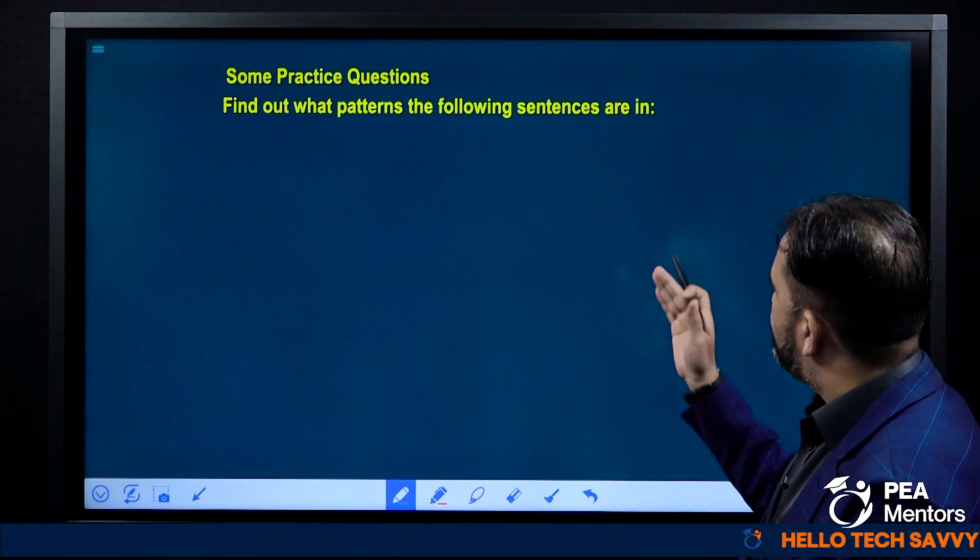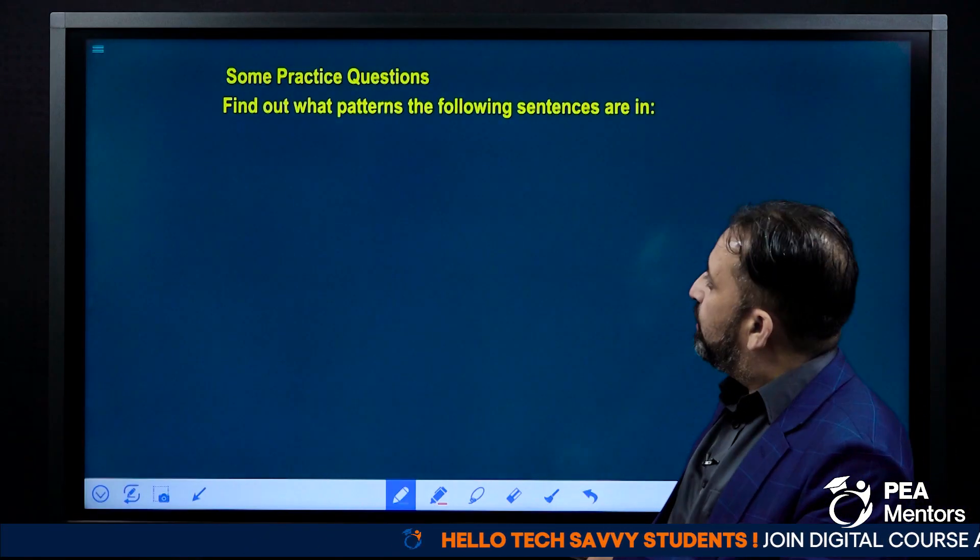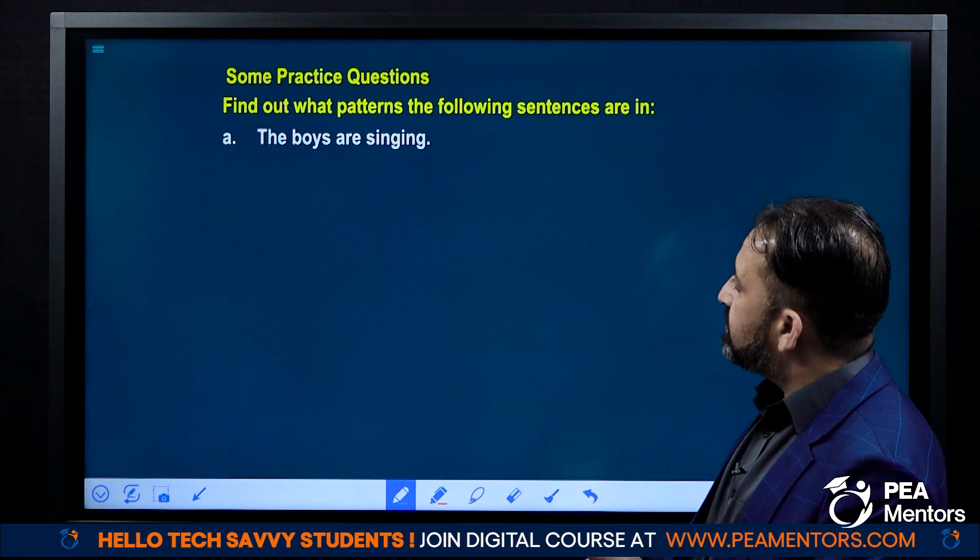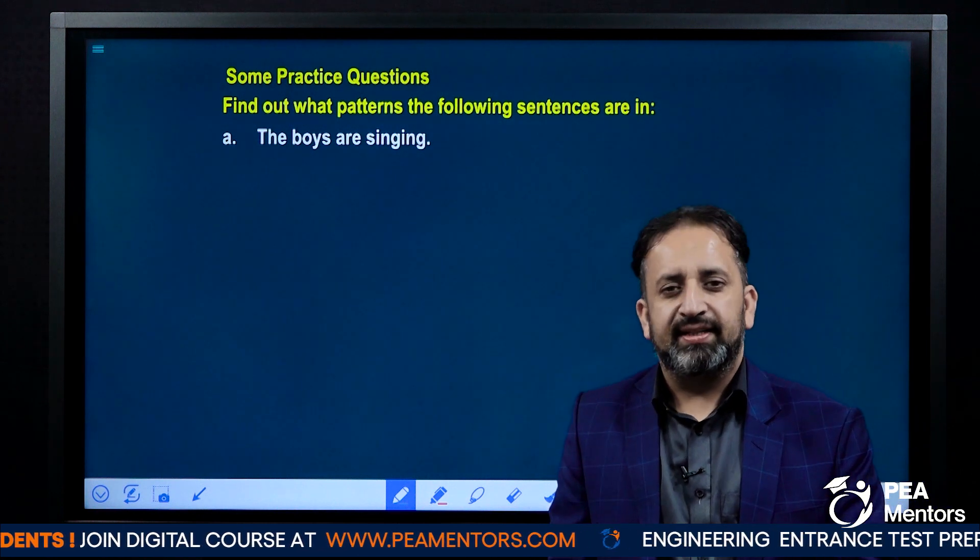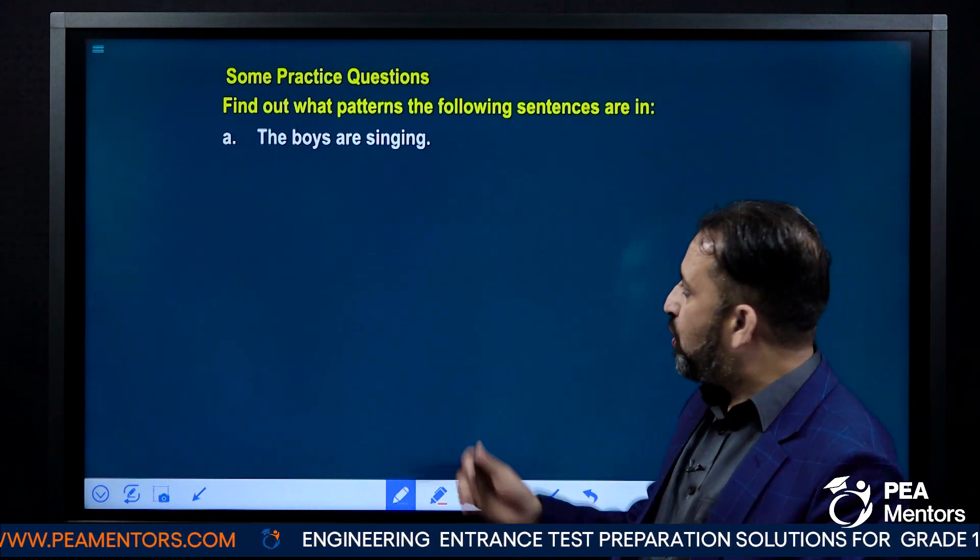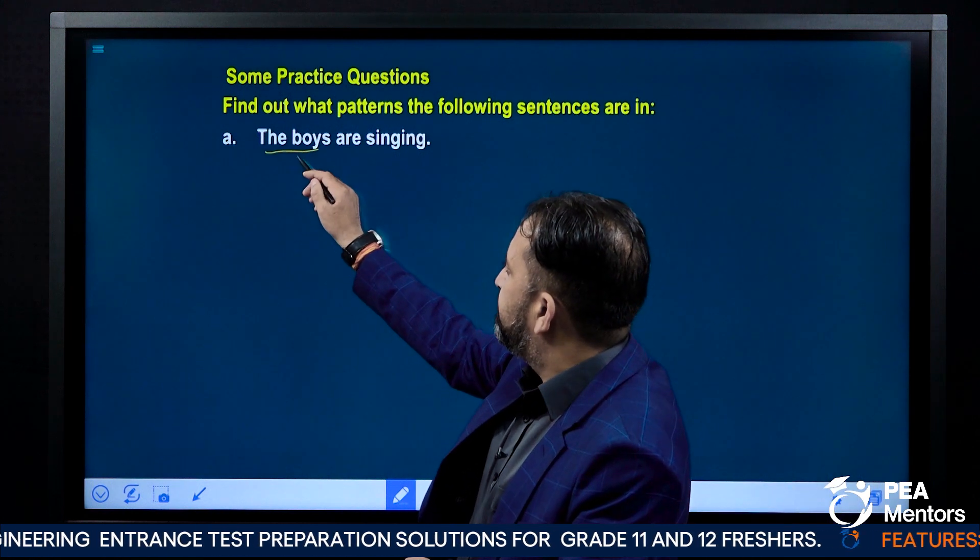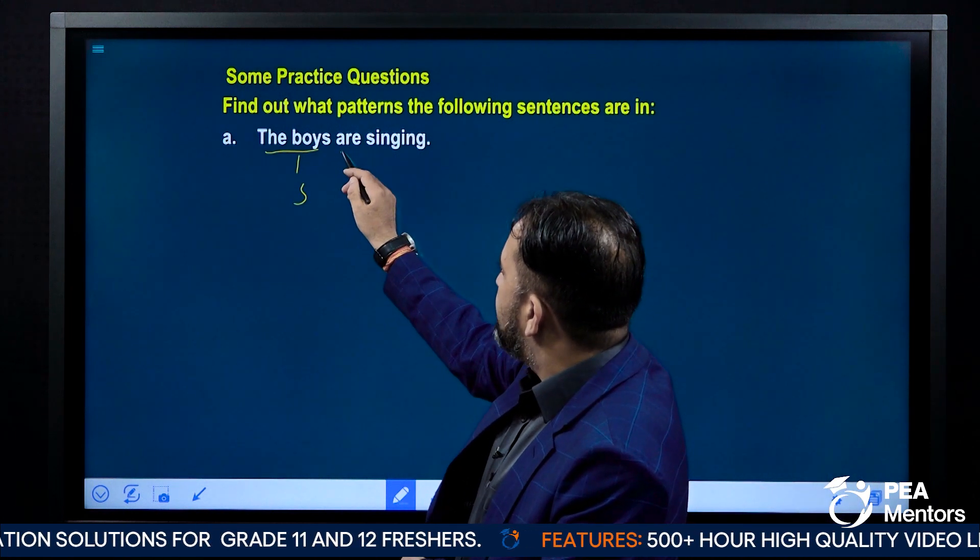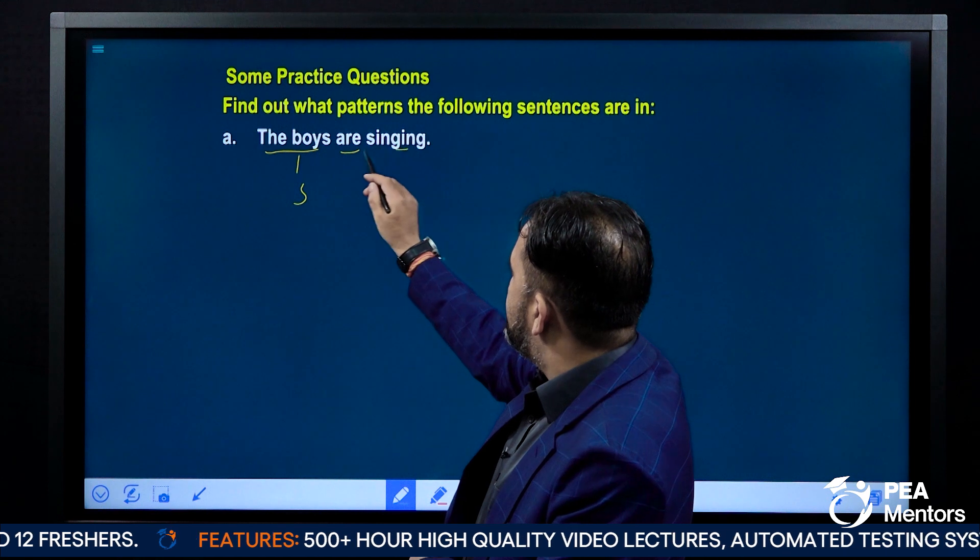Find out what patterns the following sentences are in. Look at the first one: the boys are singing. Check what is this pattern. So the boys is a subject obviously, are is an auxiliary verb, singing is a main verb.